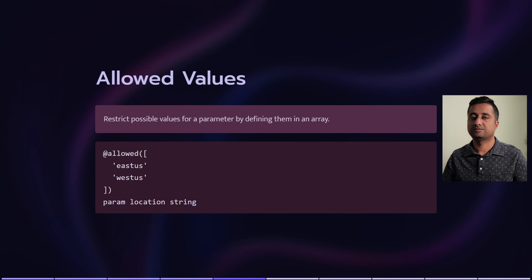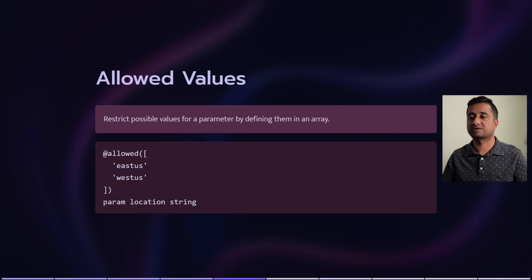Next are secure parameters. An object or a string can be made secure, so that these values are not stored as part of your logs and they stay secured.